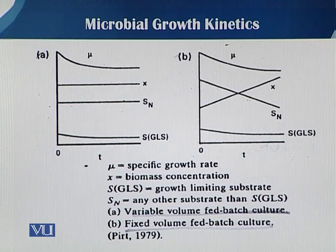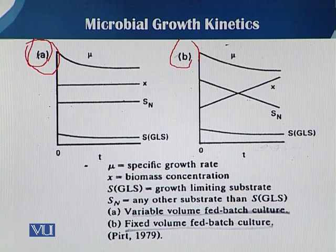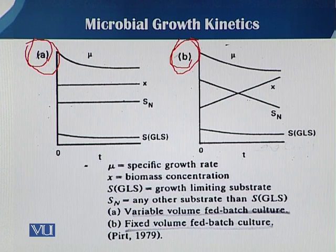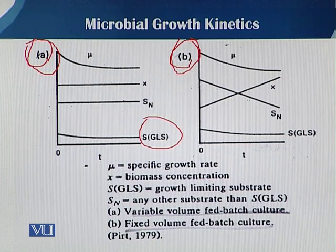In this slide you can easily see two different diagrams. Diagram A deals with variable volume and diagram B deals with fixed volume, showing how different parameters are affected in each case. SGL refers to growth limiting substrate — those substrates which directly affect growth or the fermentation process. SN refers to non-limiting substrate — those substrates which do not directly affect the fermentation process. X is the biomass.